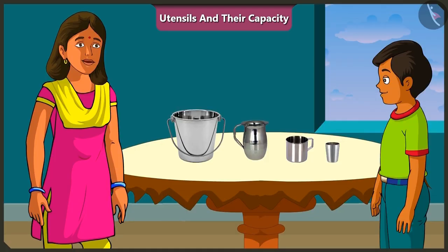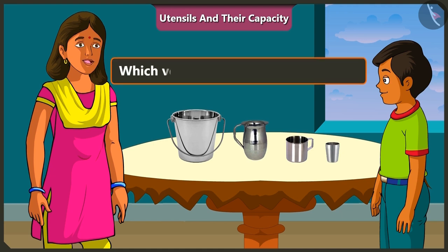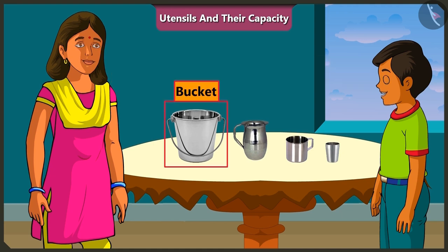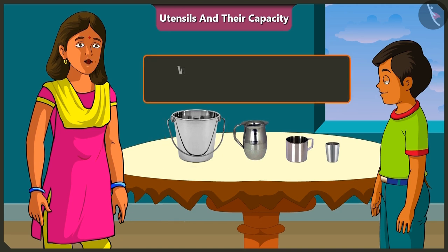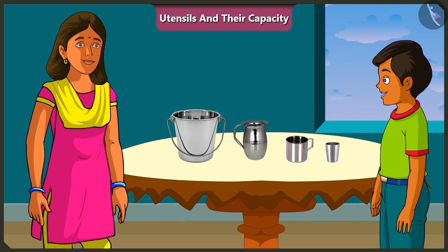Great. Mishtu, now tell me, which of these vessels has the greatest capacity? The bucket has the most capacity. And which vessel has the least capacity? The smallest vessel is the glass. So, the glass has the least capacity.